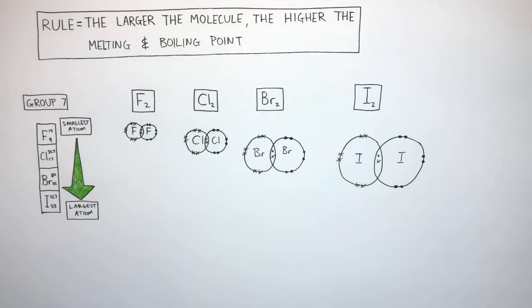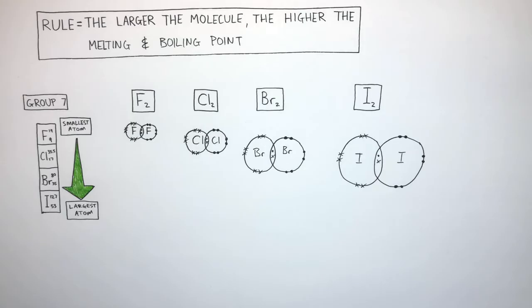Group 7 elements all form diatomic molecules. This is where there are two non-metal atoms covalently bonded to each other to form distinct molecules. You can see how the fluorine atom is the smallest, so forms the smallest molecule, and the iodine atom is the biggest, so forms the biggest molecule.